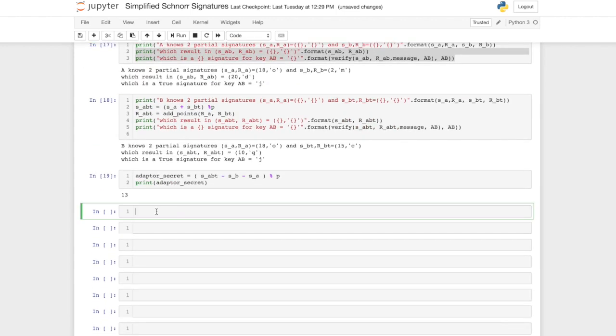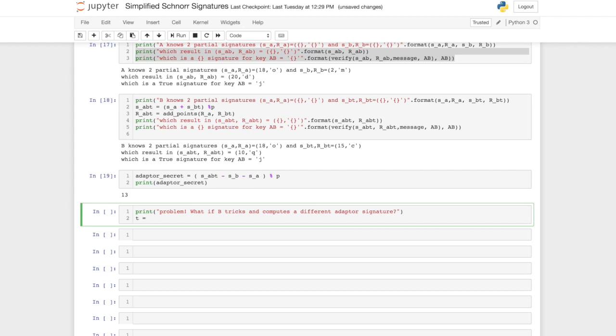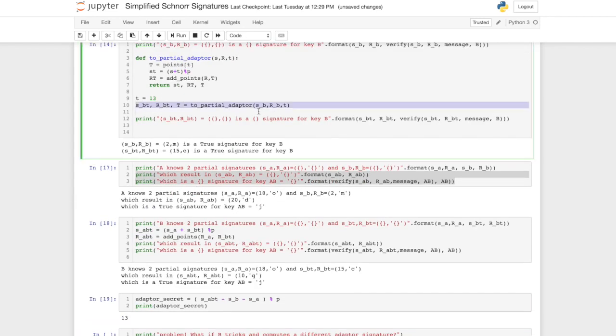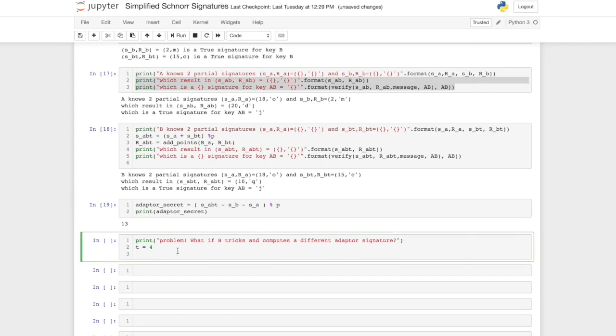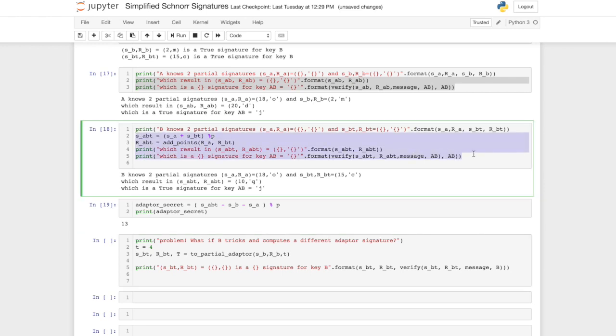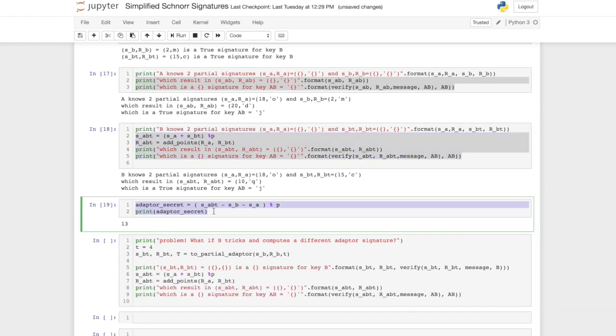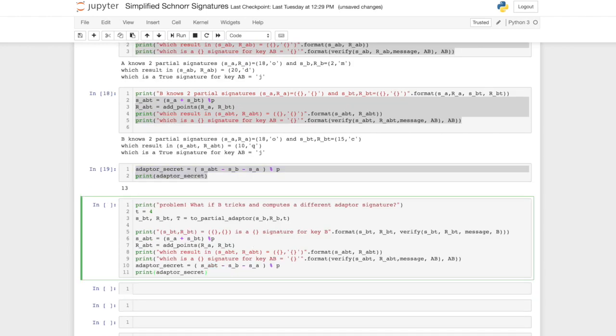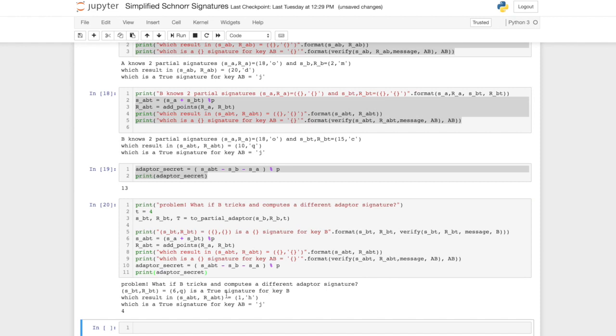What if b tricks and computes a different adapter secret? Remember we wanted to use this for example for htlc constructions, where the adapter secret also has an adapter point. And let's see what happens in that case. In order to do this I'm basically copy and pasting all the code that we used before. But I just changed the value t equals 4. Obviously the adapter signature of b also has changed. It now has the value 6q in comparison to its old adapter signature 15c.